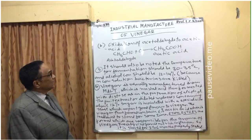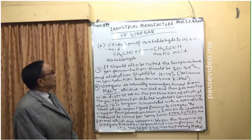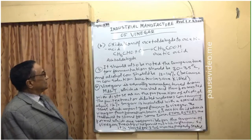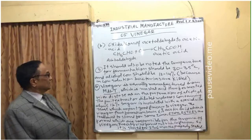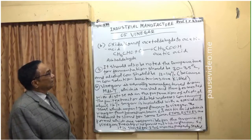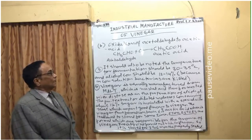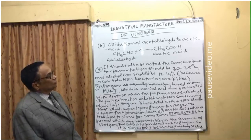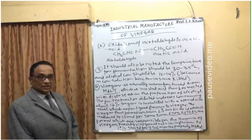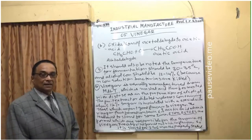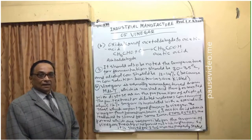Step B: oxidation of acetaldehyde to acetic acid. CH₃CHO (acetaldehyde) plus oxygen is converted into CH₃COOH (acetic acid). At 6% concentration, this acetic acid solution is called vinegar.